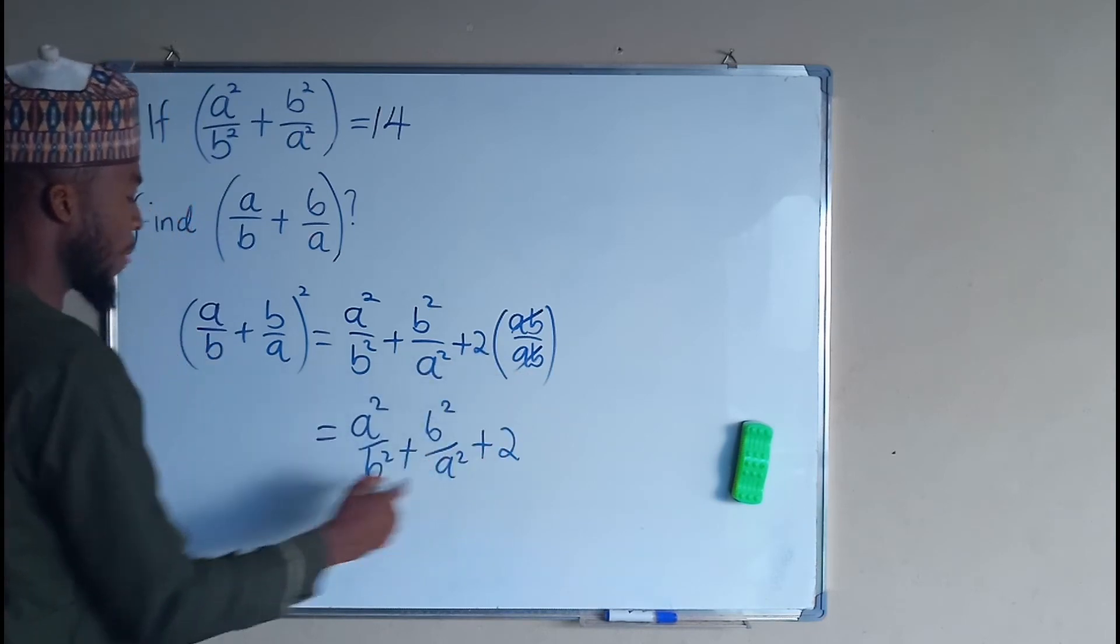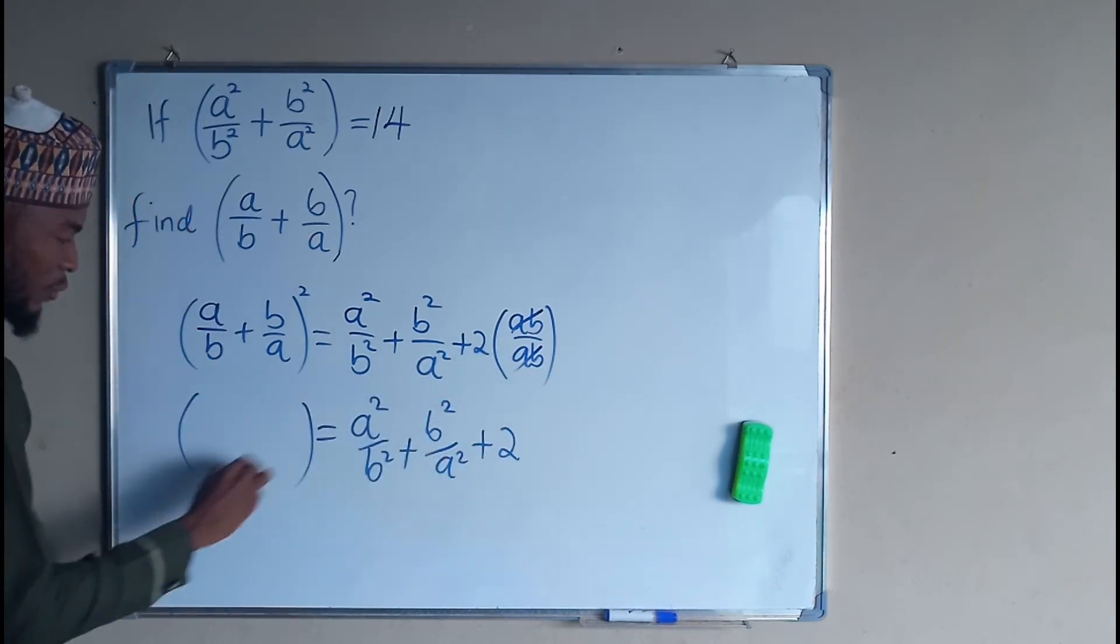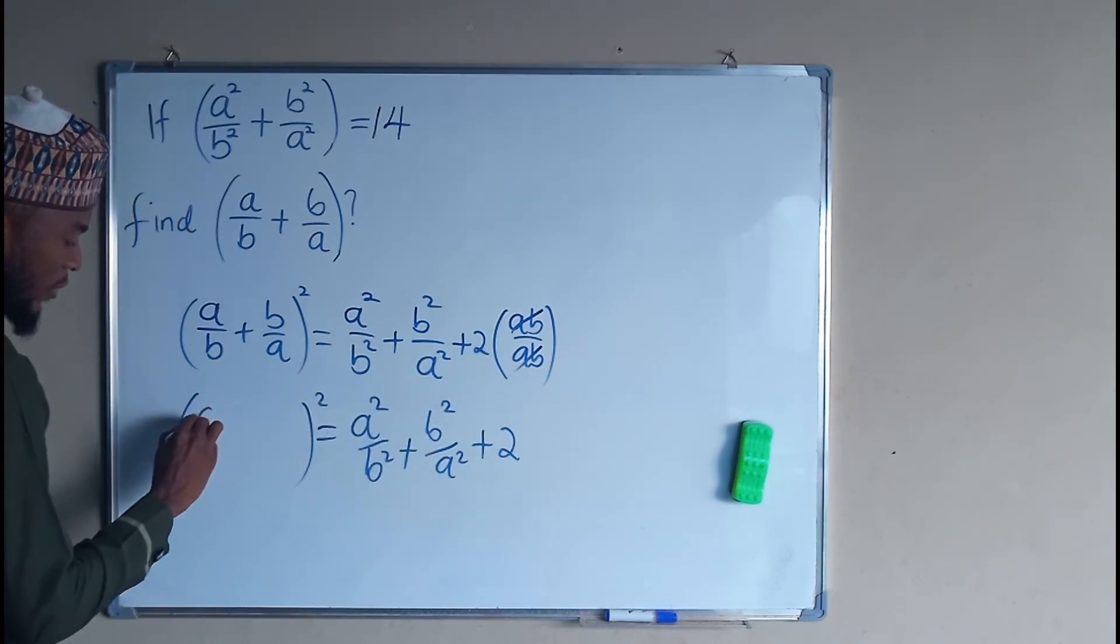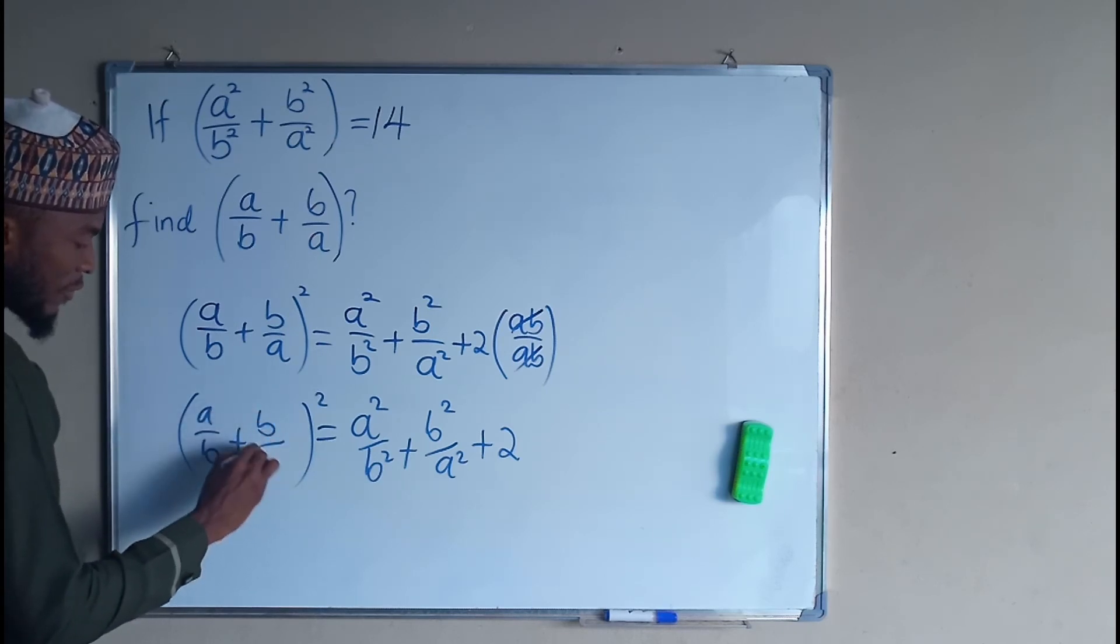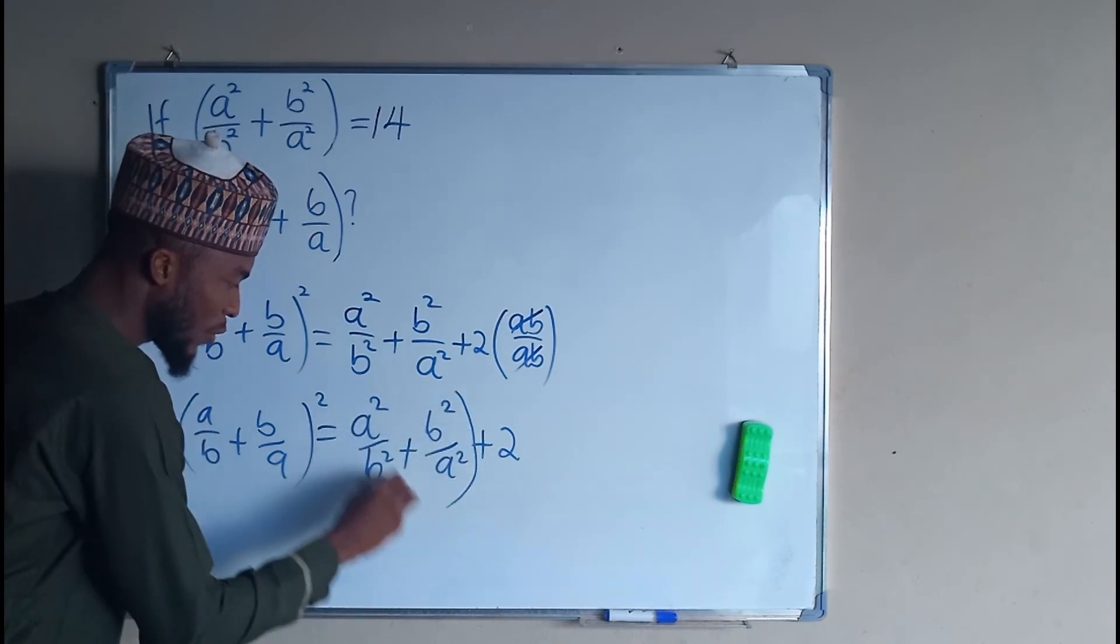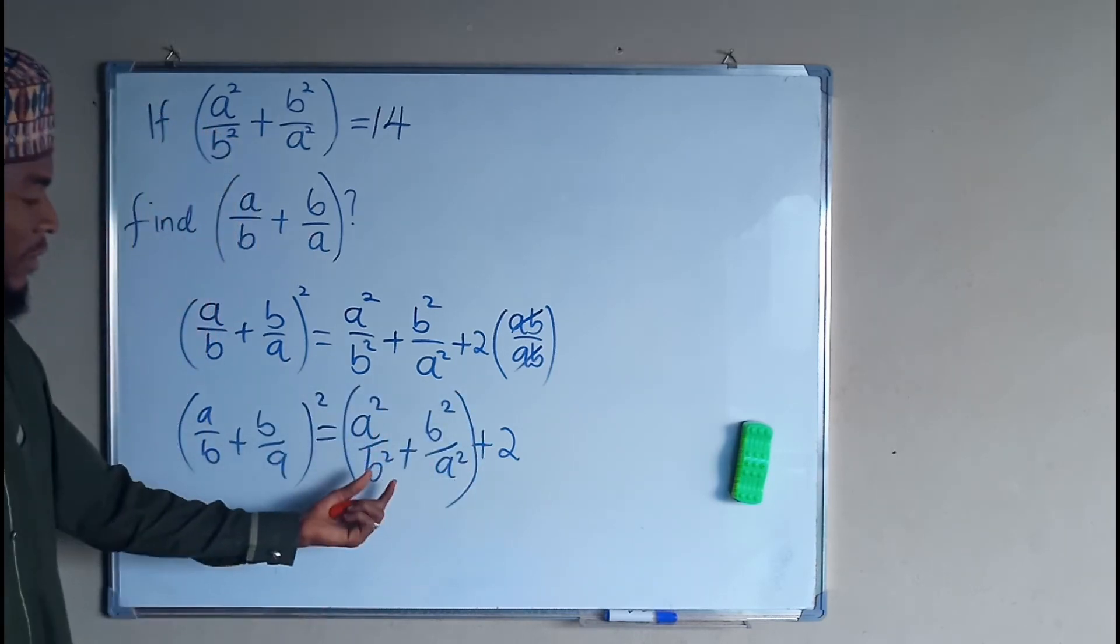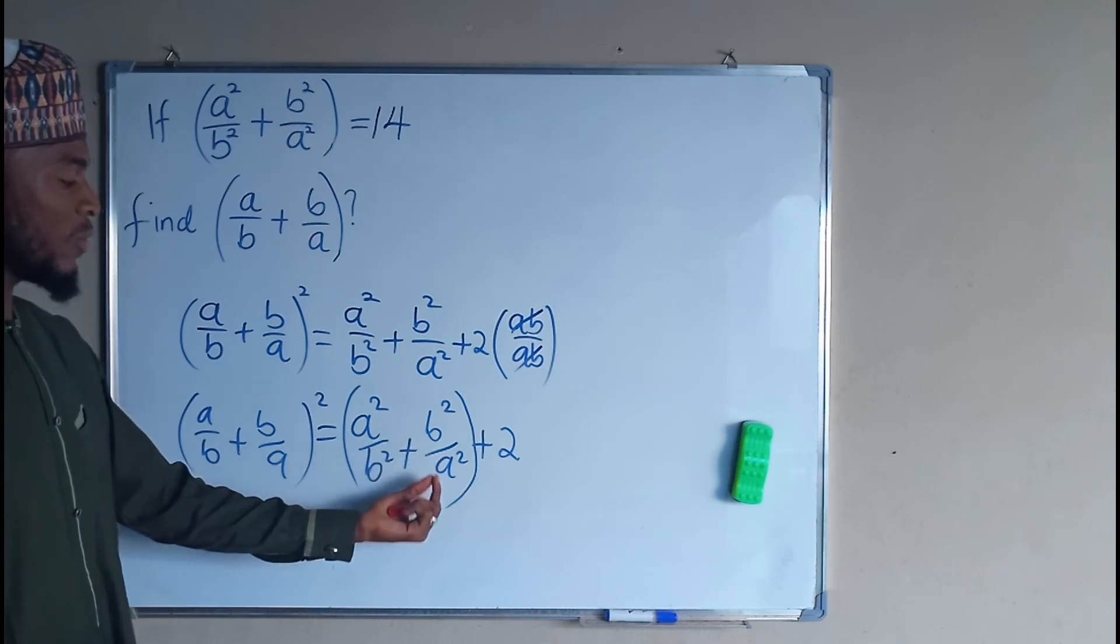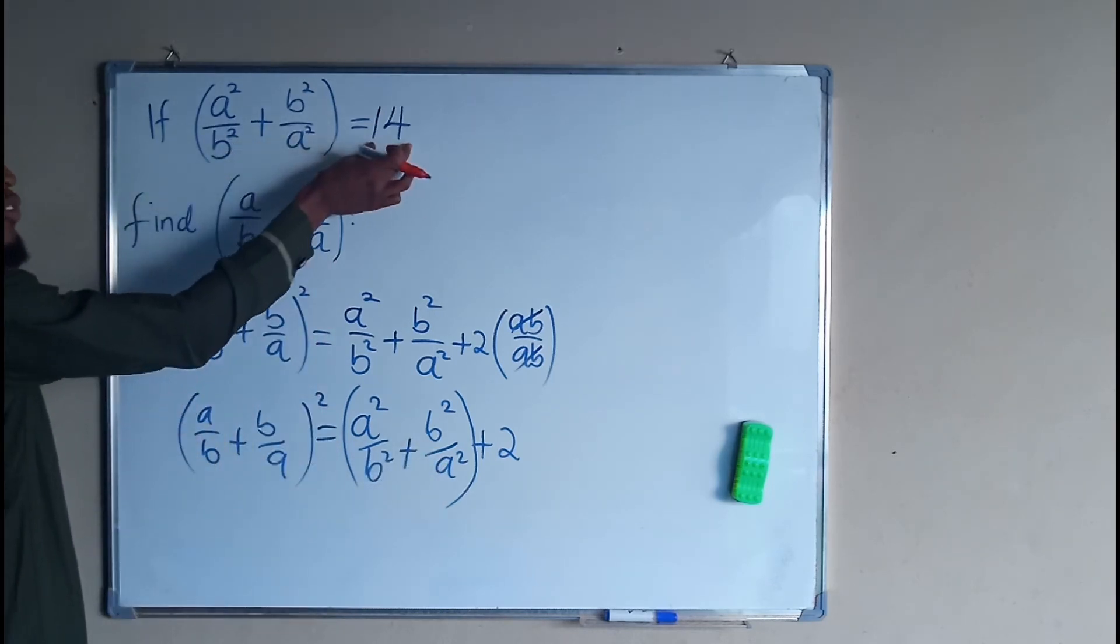On the left hand side, we have (a/b + b/a)². But if you look at this quantity here, a²/b² + b²/a² is this, which is equal to 14.